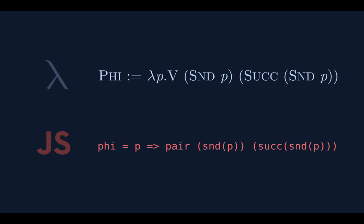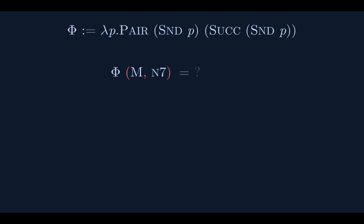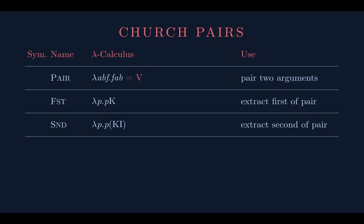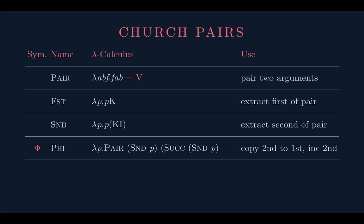Here's the phi combinator. What does it do? It takes a pair and generates a new pair: the first thing in the new pair is the second of the old pair, and the second thing is the successor of the second of the old pair. It shifts the second thing to the first position and increments the second. Phi of (0,0) gives (0,1). Phi of that gives (1,2). Phi of that gives (2,3). What's eight applications of phi to (0,0)? Seven on the left, eight on the right.